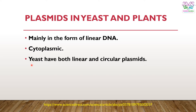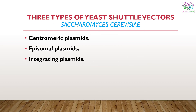Regarding yeast, yeast have both linear as well as circular plasmids. Most of the shuttle vectors described in molecular biology and used in genetic engineering are from Saccharomyces cerevisiae, which is a yeast. There are three types of these shuttle vectors from yeast: centromeric plasmids, episomal plasmids, and integrating plasmids.